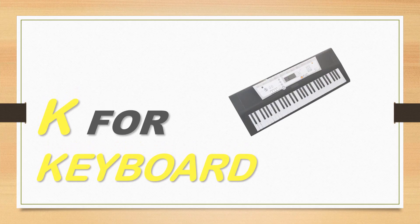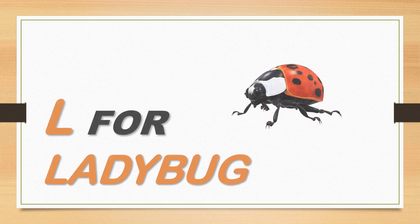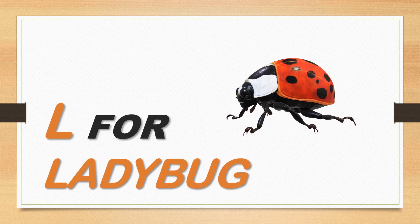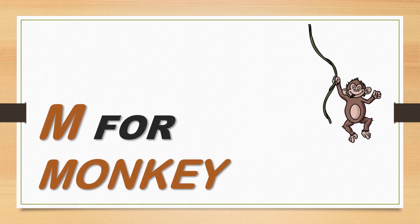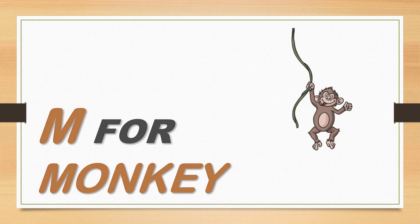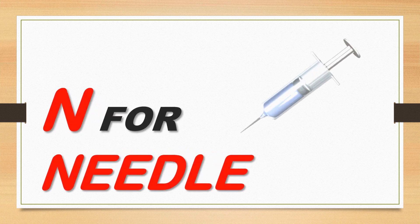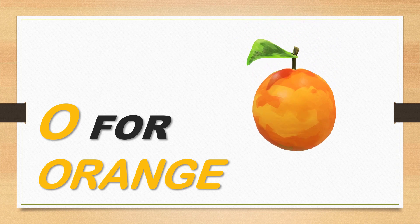K is for keyboard. K, keyboard. K, keyboard. K, keyboard. L is for ladybug. Ladybug, ladybug. L, ladybug. M is for monkey. Monkey, monkey. M, monkey. N is for needle. Needle, needle. N, needle. O is for orange. O, orange. O, orange. O, orange.